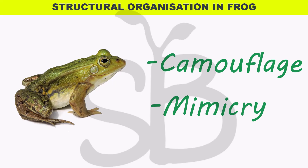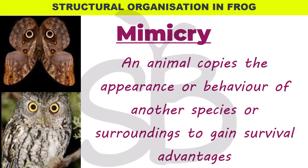In this textbook, two important terms are camouflage and mimicry. Mimicry is when an animal copies the appearance, behavior, or sound of another species or its surroundings to gain survival advantages. Organisms mimic colors, sounds, and appearance to escape enemies or predators.